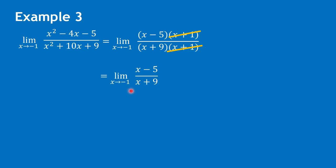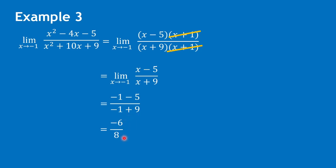We can now substitute negative 1 for x. We have negative 1 minus 5 all over negative 1 plus 9. Negative 1 minus 5 is negative 6, and negative 1 plus 9 is 8. Simplifying, we get negative 3 over 4.